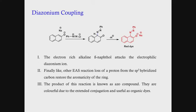This gives the azo compound, which is colorful due to extended conjugation and can be used as an organic dye. This is a fantastic reaction for determining whether primary aryl amines are present in a sample, confirmed by the formation of the nice red dye.